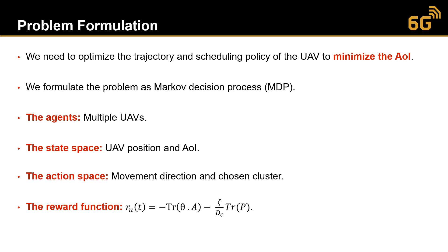We formulate this problem as a Markov decision process where the agents are the multiple UAVs, the state includes the positions of the UAVs and the age of information of the sensors, the action space is the movement direction and the chosen cluster, and the reward function is the weighted sum of the age of information plus the weighted sum of the transmission power of the sensors.